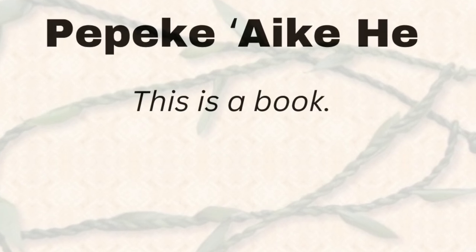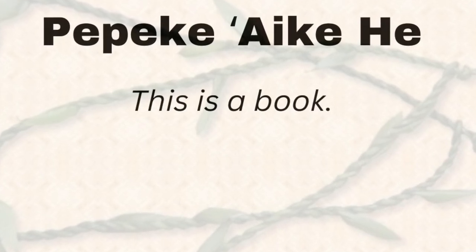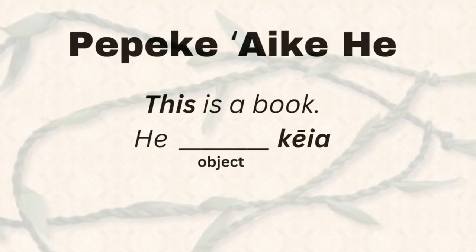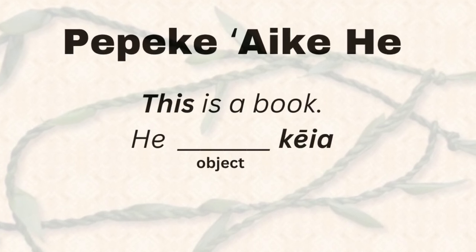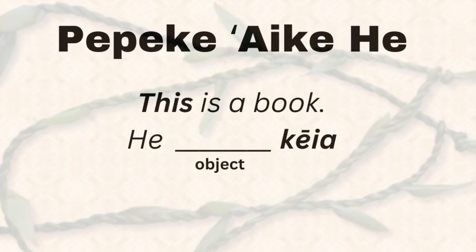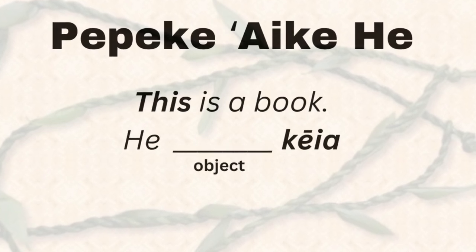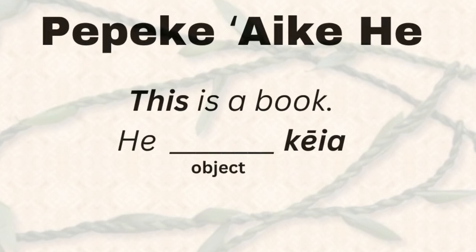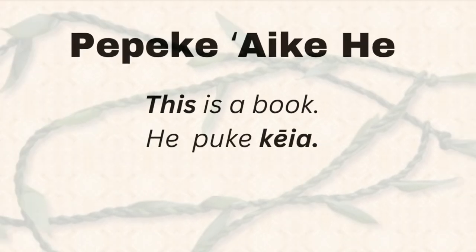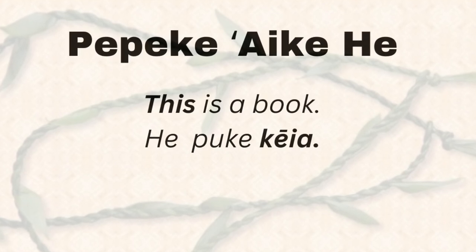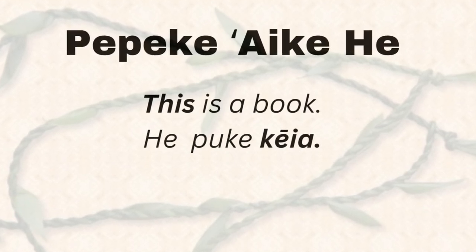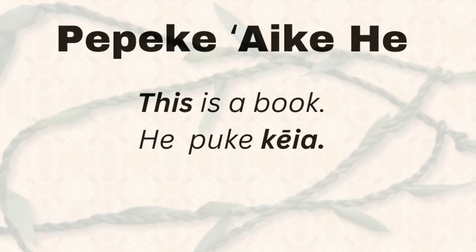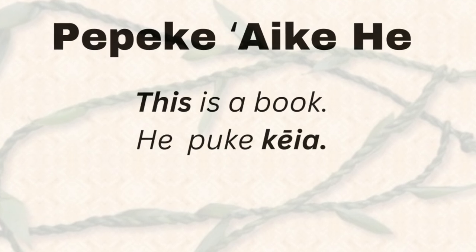One more time: keia. So I'm going to take this one that is highlighted here, and in that blank section I am going to insert the word for book. That blank is where the object name goes. In Hawaiian we say puke — puke for book. So the complete sentence would be he puke keia. Everyone say that: he puke keia. One more time: he puke keia. And that translates to 'this is a book.'